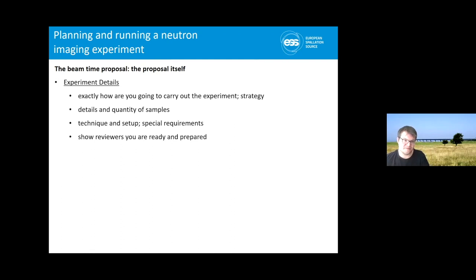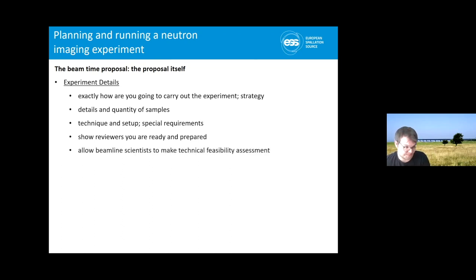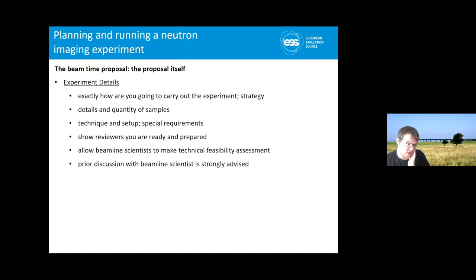Underline that you already have samples prepared or will prepare them. Make sure technical feasibility is in place. If there's doubt about feasibility and it comes up in the review panel — that you haven't contacted the beamline scientists — that's not a good sign. You would be asked to contact them and then apply again in the next round.